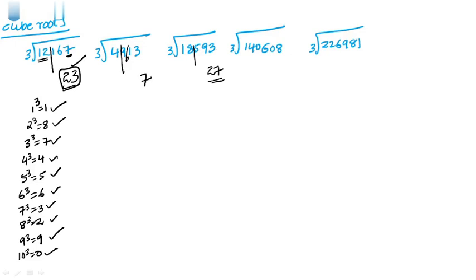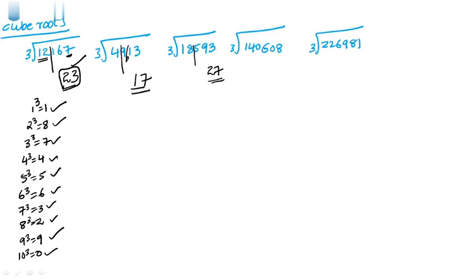Using units place only — for the number 140608: units place is 8, and the possibility is 2. Then looking at the remaining number after separating the last three places, which is 140, the nearest cube value less than 140 is around 125 (5 cube). So the answer should be around 50-something. Confirm using q value: 140 is less than 150 (which would be beyond 5 cube), so the answer is 52.